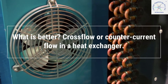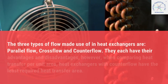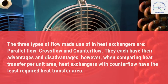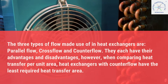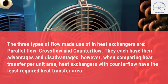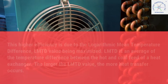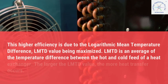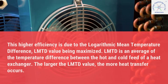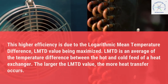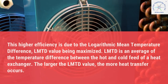What is better — cross flow or counter-current flow in a heat exchanger? The three types of flow used in heat exchangers are parallel flow, cross flow, and counter flow, each with their advantages and disadvantages. However, when comparing heat transfer per unit area, heat exchangers with counter flow have the least required heat transfer area. This higher efficiency is due to the logarithmic mean temperature difference LMTD value being maximized. LMTD is an average of the temperature difference between the hot and cold feed of a heat exchanger; the larger the LMTD value, the more heat transfer occurs.